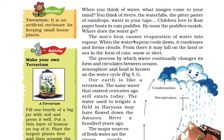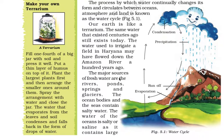When the water vapour cools down, it condenses and forms clouds. From there it may fall on the land or sea in the form of rain, snow or sleet. This entire cycle is known as the water cycle. The process by which water continuously changes its form and circulates between oceans, atmosphere and land is known as the water cycle.